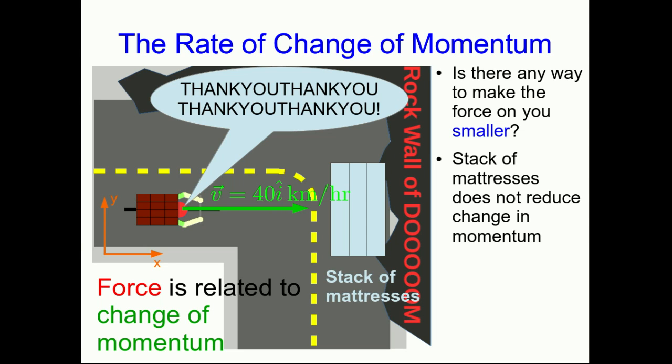Because notice, your change in momentum is going to be exactly the same as it was without the stack of mattresses. You're going to go from, say, 40 kilometers per hour in the x direction down to zero, just like you were going to if you hit the rock wall. What is it that the mattresses change so that the force is smaller?